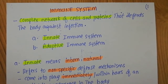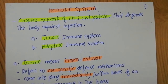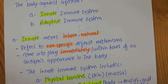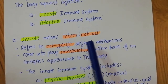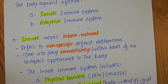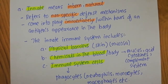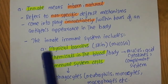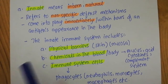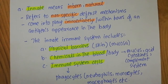What does 'innate' mean? It actually means inborn or natural. The innate immune system is an inborn and natural immune system that defends the body against infection by different pathogens. It refers to non-specific defense mechanisms that come into play immediately or within hours after an antigen appears in the body. The adaptive immune system needs a lot of time for action, but the innate immune system comes into play immediately.